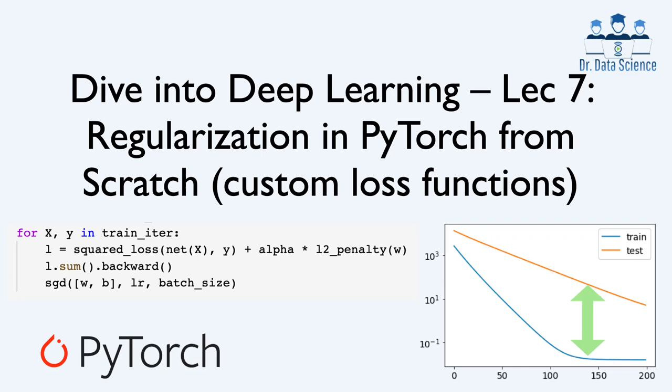Hello everyone, Dr. Data Science here to teach you data science methods and tools today, tomorrow and beyond. Today we are going to see how we can implement regularization for deep learning models in PyTorch from scratch. During this process you are going to see how we can define custom loss functions when training deep learning models and use torch.autograd or PyTorch automatic differentiation to solve optimization problems.